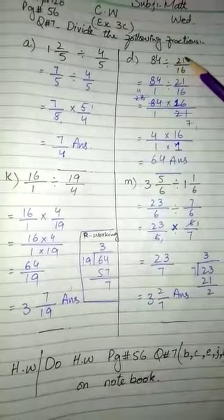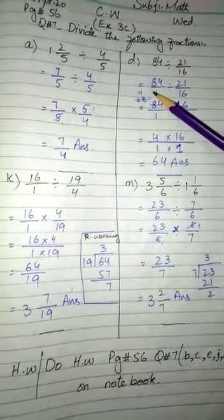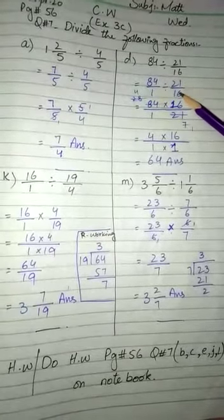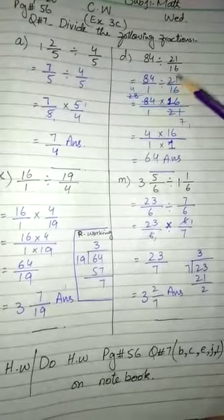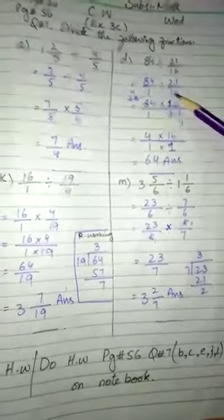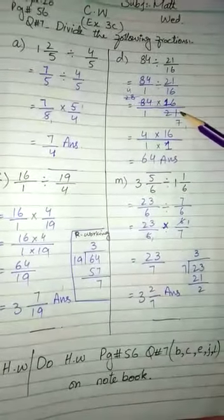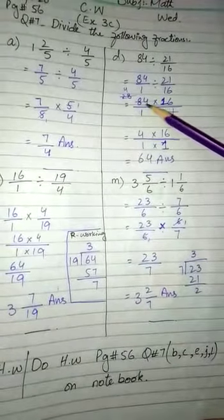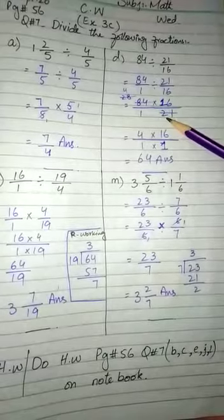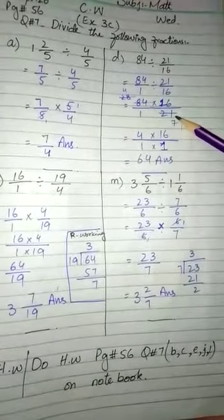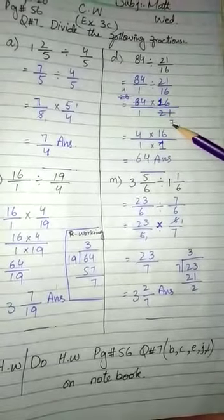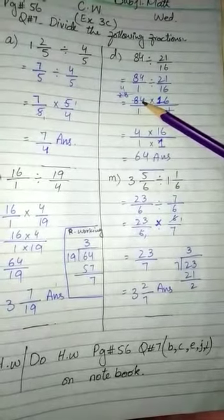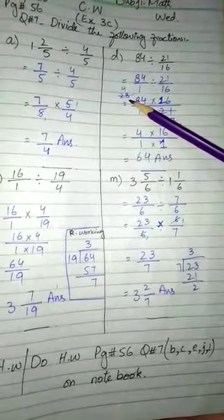Next is part d: 84 divided by 21/16. We write this as 84/1 divided by 21/16. Now we change it: 84/1 multiply by 16/21, because this is the rule of division. Now we will cancel: 21 and 84 can be divided by 3. 3 times 7 is 21, 3 times 28 is 84. So we get 28 times 16 over 7.